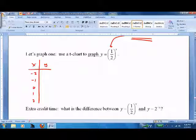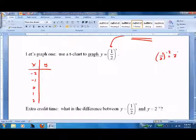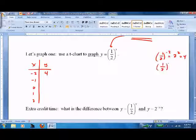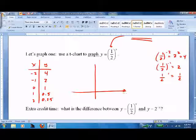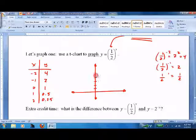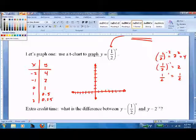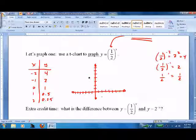Let's graph one using a t-chart. y equals one half to the x. Negative two: one half to the negative two is the same as two squared because we flip it - that's four. One half to the negative one is two. Anything to the zero is one. One half to the first is just one half, which is 0.5. One half squared is 0.25. So we plot: negative two comma four, negative one comma two, zero comma one, one comma 0.5, two comma 0.25.